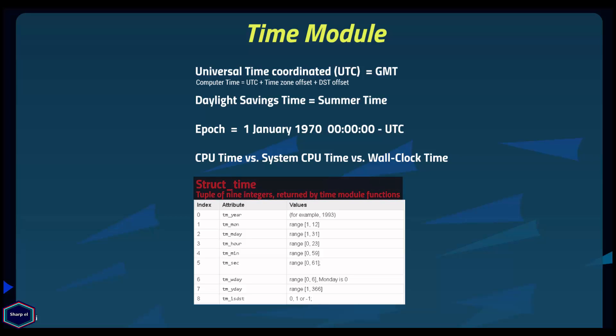The time module in Python also defines struct_time for holding date and time. Many functions like gmtime() and localtime() return a struct_time object, also called a time tuple, which is a tuple of 9 integers: year, month, month day, hour, minute, second, week day, year day, and a daylight saving flag which can be 1 if daylight saving time is in effect, 0 if not, and -1 if it is not known.